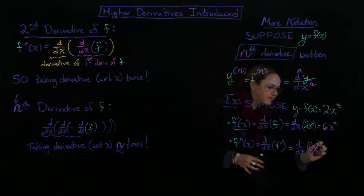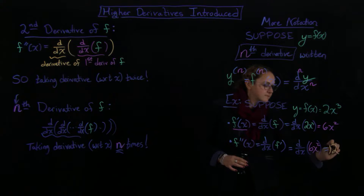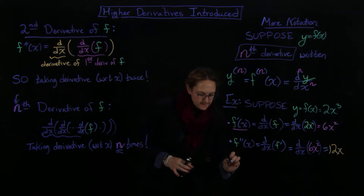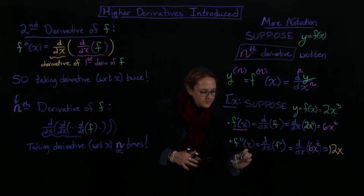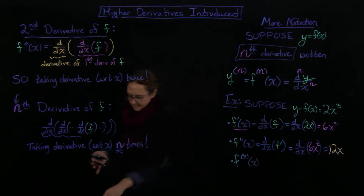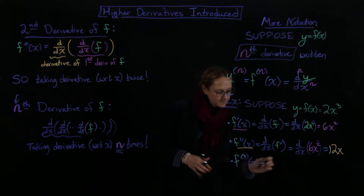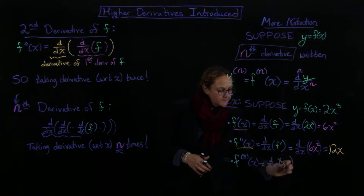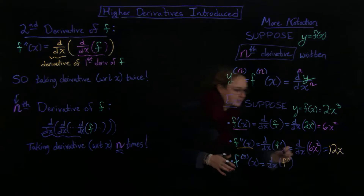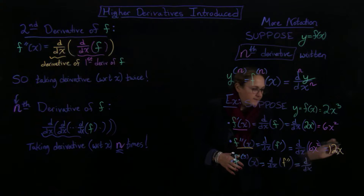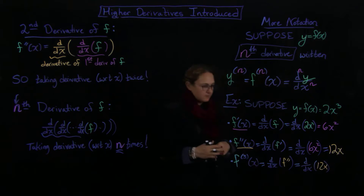Computing that out, the second derivative is 12x — I'll write that in orange to keep track. Now for the third derivative, I take the derivative with respect to x of f''(x), which is the derivative of 12x, and I get 12.